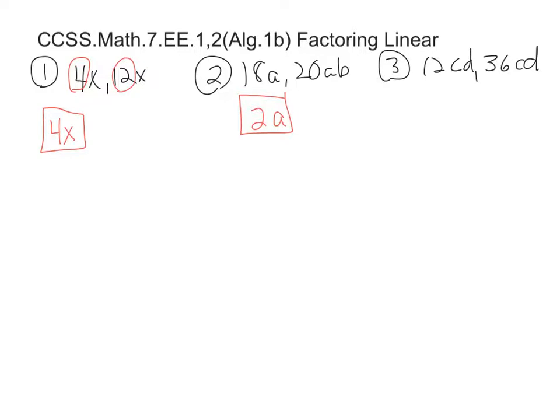The third one. Well, 12 is common to both. 12 goes into 36. So 12 is common to both. And we have a C in both and we have a D in both. So you can factor out a 12CD.